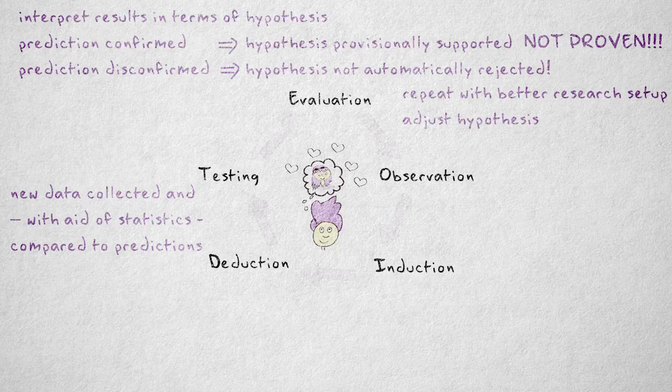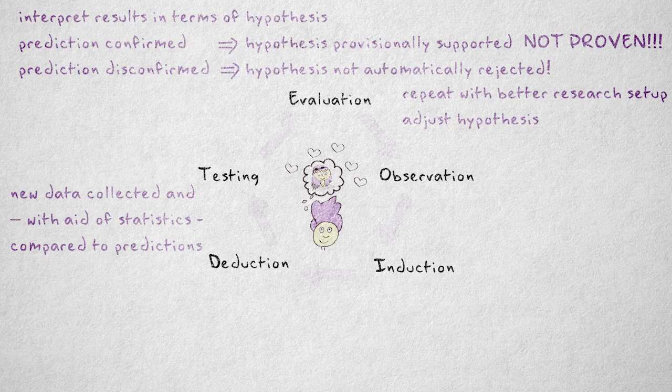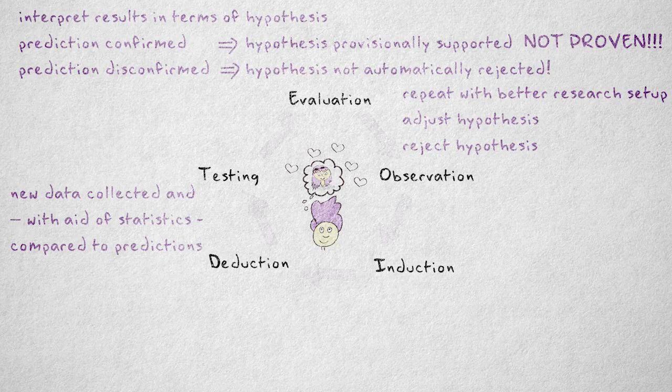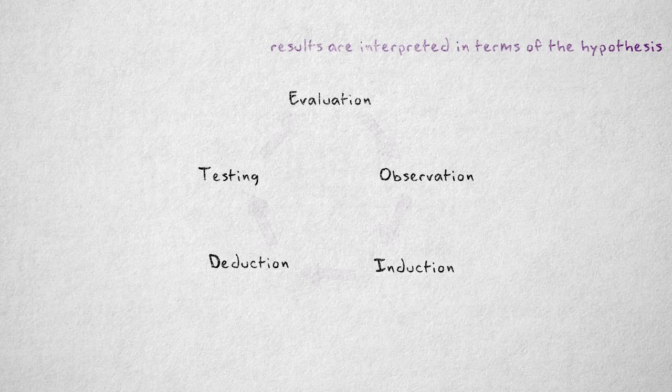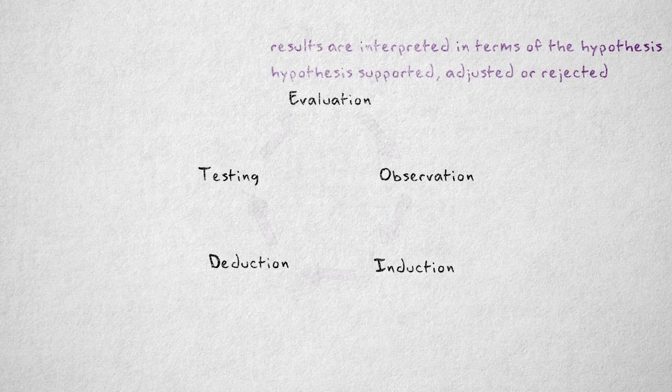In other cases, the hypothesis is adjusted based on the results. The hypothesis is rejected and discarded only in very rare cases. In the evaluation phase, the results are interpreted in terms of the hypothesis, which is provisionally supported, adjusted, or rejected.